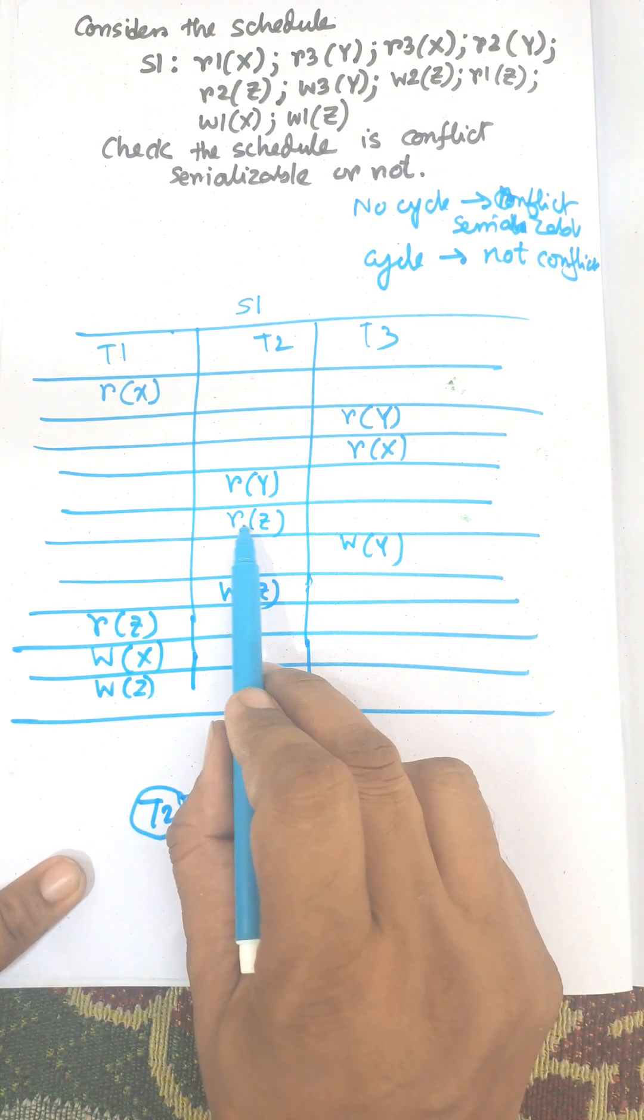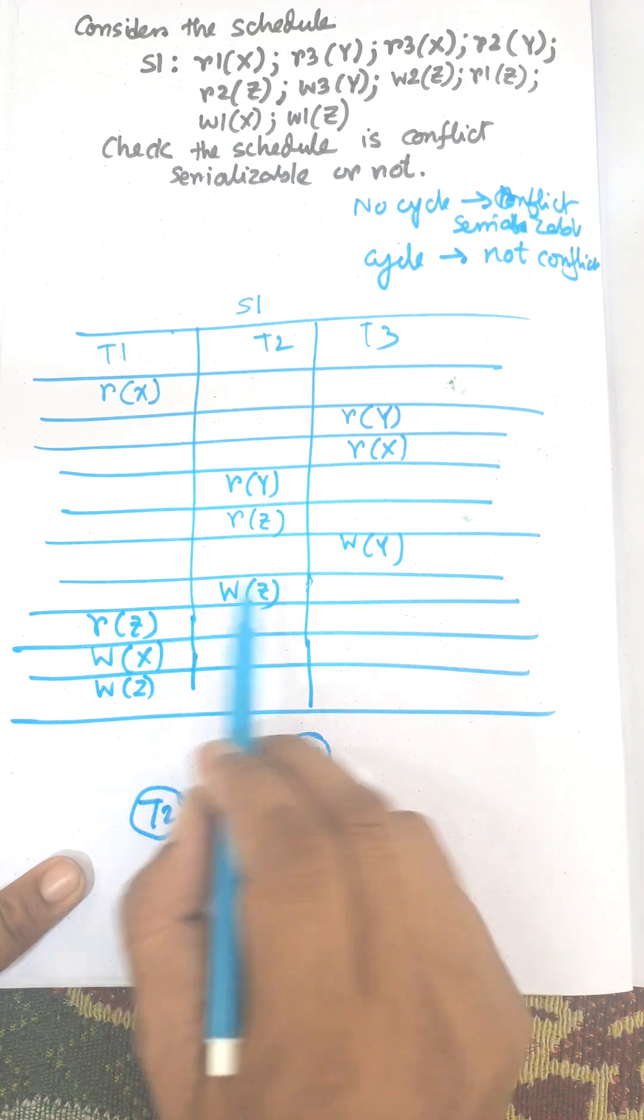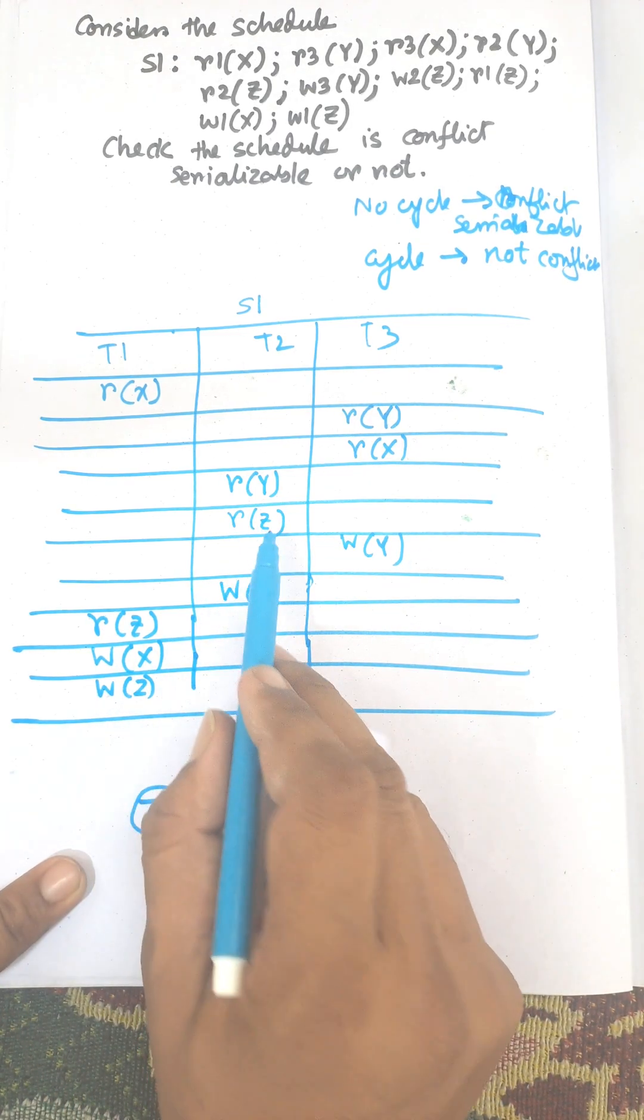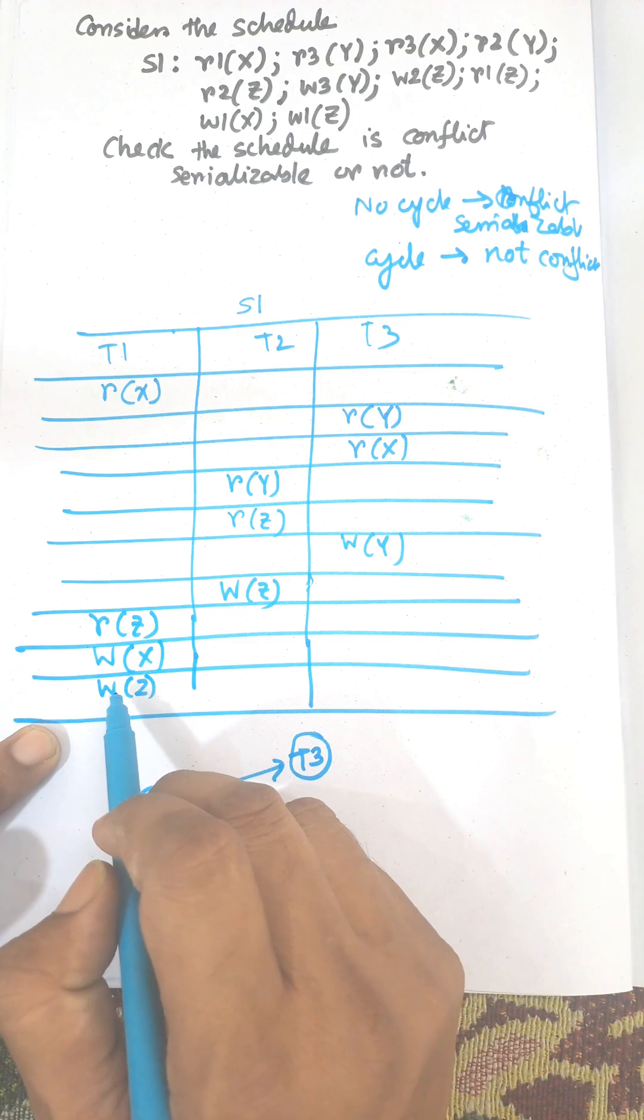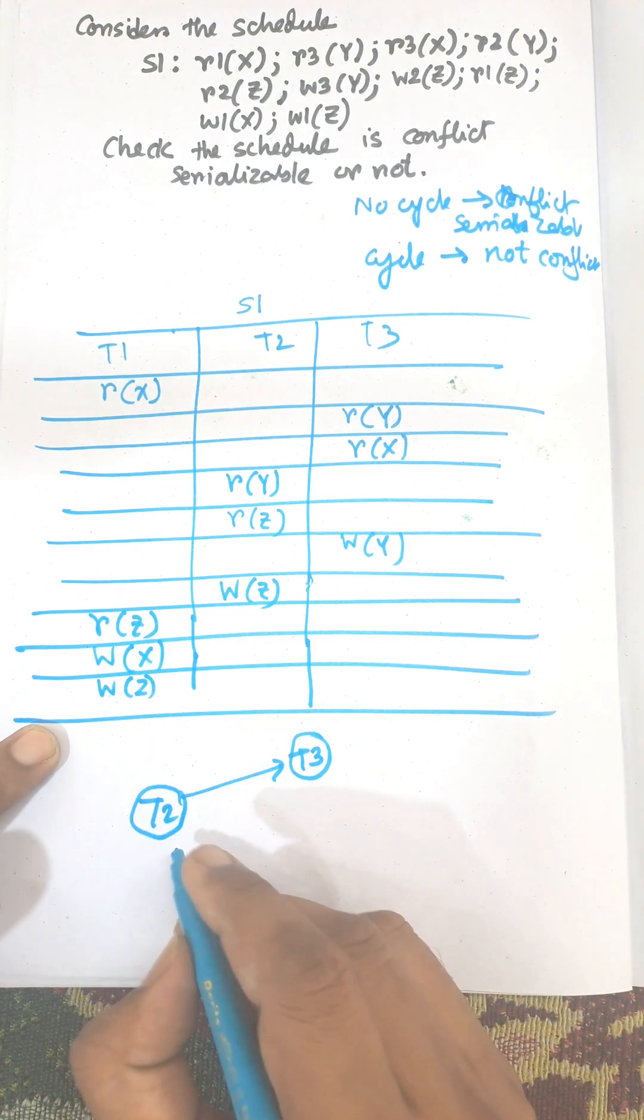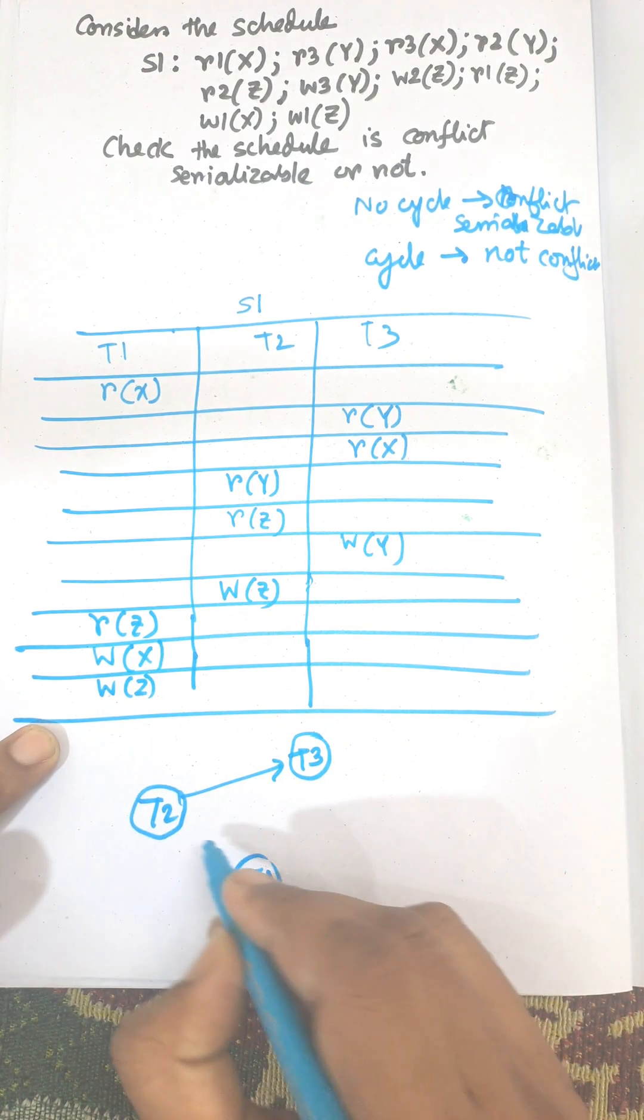Next one is read Z. There is no read Z and there is a write Z. So T2 to T1. I mean T2 to T1.